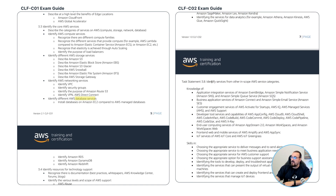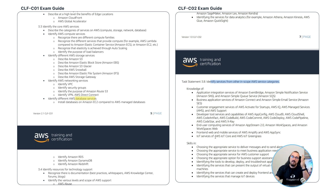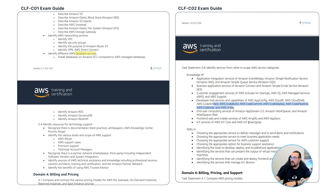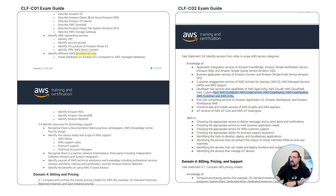The other thing is task statement 3.8 — identify services from other in-scope categories, for example developer tools capabilities, front-end services, IoT services. A bunch of these were already in there, but notice they've added the code services, which were previously not really in focus. So a couple of extra things get added to expand the scope for Cloud Practitioner.